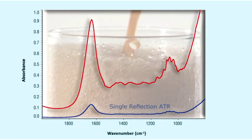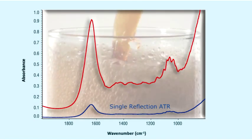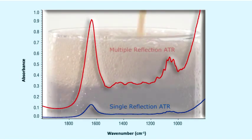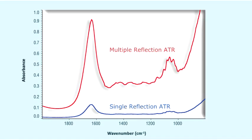Carbohydrates in the sample are nearly undetectable using the single reflection ATR, whereas the bands are accentuated by increasing the number of reflections to 10.